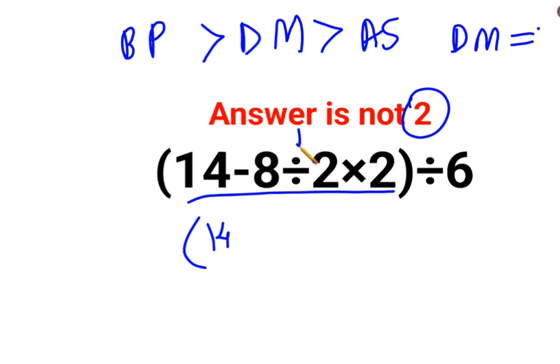So in sums like these, you will do the first operation which happens from your left hand side. You will always go from left to right for sums which are involving division and multiplication.